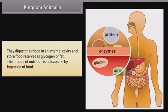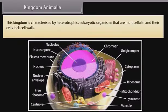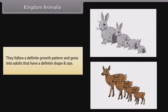Their mode of nutrition is holozoic, by ingestion of food. Many animal phyla appeared in the fossil record as marine species during the Cambrian explosion, about 542 million years ago. This kingdom is characterized by heterotrophic eukaryotic organisms that are multicellular and whose cells lack cell walls. They follow a definite growth pattern and grow into adults that have a definite shape and size.